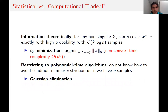This leads to a statistical versus computational trade-off, at least a conjectured trade-off. Information theoretically, for any non-singular covariance matrix sigma, we can recover w-star exactly with high probability with only k log n samples, even if it's arbitrarily ill-conditioned, using L0 minimization. The problem is that this is a non-convex program, and the only way we know how to implement it takes time n to the k—essentially iterating over all supports of size k. If we restrict to polynomial-time algorithms, we do not know how to avoid condition number restrictions until we have n samples, at which point we can just do Gaussian elimination.